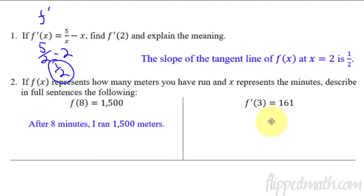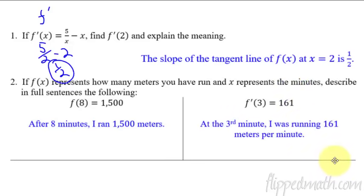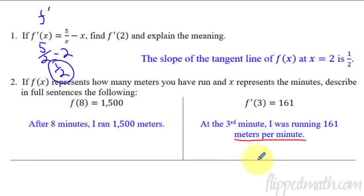The next one is different because it has a little prime — f prime of 3. Plugging in 3: that's still 3 minutes, but now it's the derivative, which means the instantaneous rate of change. So at the third minute, I was running 161 meters per minute. Every time you have the derivative, you're dealing with a rate of change — meters per minute — so be careful to describe it that way, not just as 161 meters.